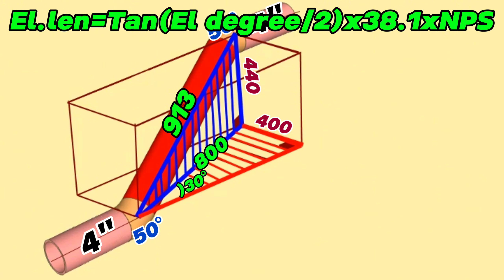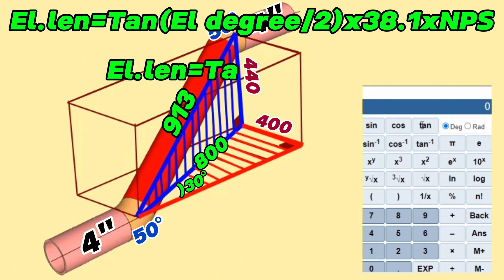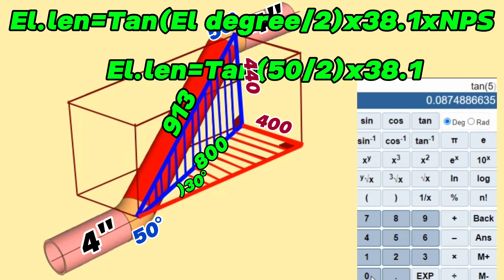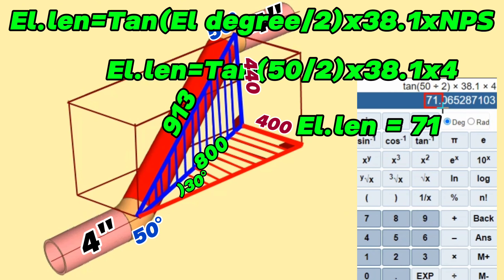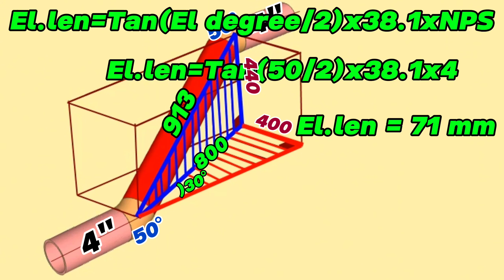Now we are writing our elbow information into this formula. For a 4-inch 50-degree butt-weld elbow center-to-end dimension: equals tangent(50 ÷ 2) × 38.1 × 4. Using a scientific calculator, the 4-inch 50-degree butt-weld elbow center-to-end dimension equals 71 millimeters.